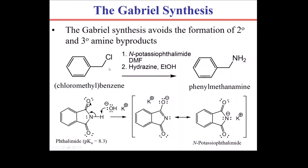The Gabriel synthesis is a two-step process. We take an alkyl halide and instead of adding ammonia, we add N-potassium phthalimide in dimethylformamide as solvent, then follow it up with hydrazine and ethanol. N-potassium phthalimide can be produced by reacting phthalimide with potassium hydroxide — the hydroxide deprotonates it and you end up with N-potassium phthalimide. When showing your mechanism, you just start with this compound and ignore the potassium because it's a spectator ion.